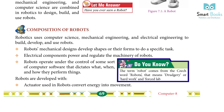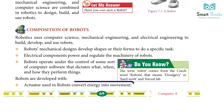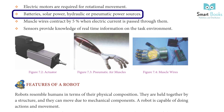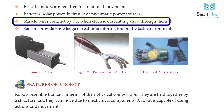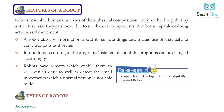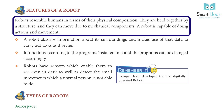Do you know? The term 'robot' comes from the Czech word 'robota', which means drudgery, hard work, and forced labor. Robots are developed with actuators that convert energy into movement. Electric motors are required for rotational movement. Power sources include batteries, solar power, hydraulic, or pneumatic systems. Muscle wires contract by 5% when electric current is passed through them. Sensors provide knowledge of real-time information on the task environment.